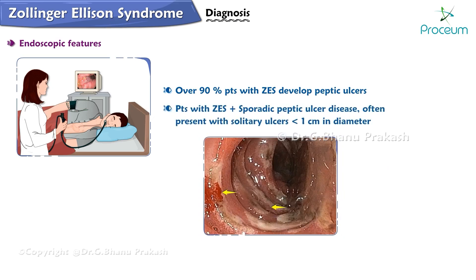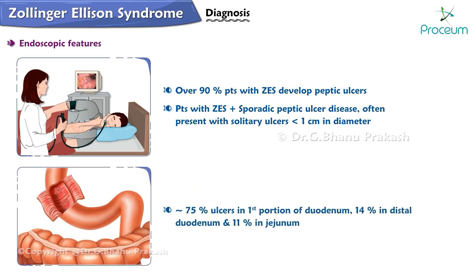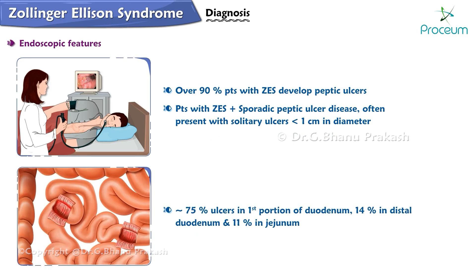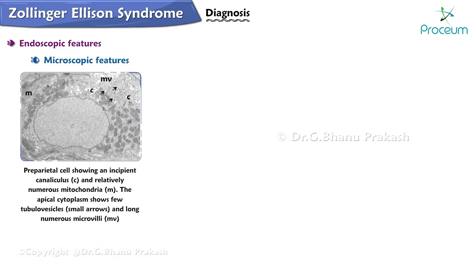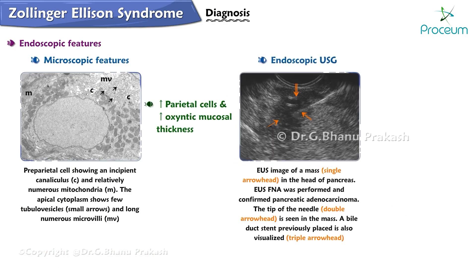Patients often present with solitary ulcers less than one centimeter in diameter. Approximately 75% of ulcers are in the first portion of the duodenum, 14% in the distal duodenum, and 11% in the jejunum. Microscopically, there is an increase in parietal cells and an increase in oxyntic mucosal thickness.